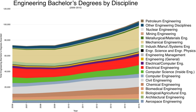An institution offering engineering education in Sweden is called a Teknisk Högskola (Institute of Technology). These schools primarily offer five-year programs resulting in the Civilingenjör degree, internationally corresponding to a Master of Science in Engineering degree. These programs typically offer a strong backing in the natural sciences, and the degree opens up for doctoral (PhD) studies towards the degree of Teknologie Doktor.